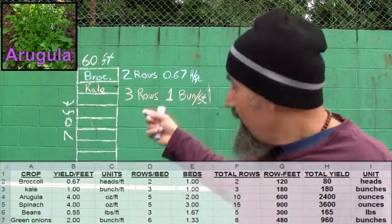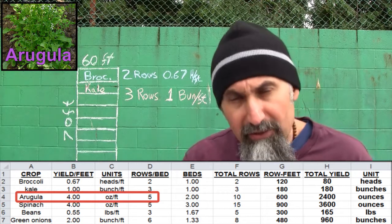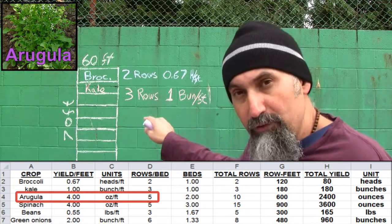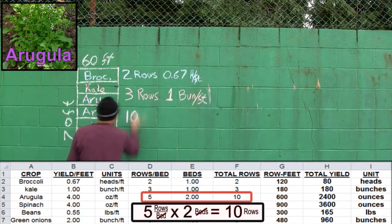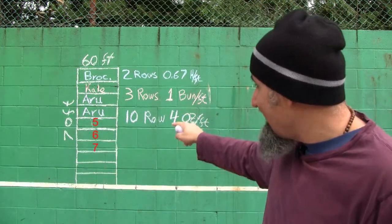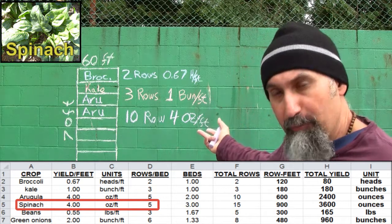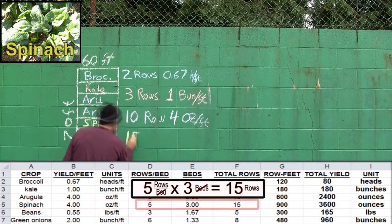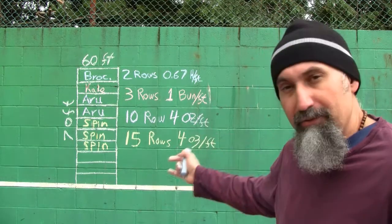In beds three and four we're going to plant arugula. For arugula, the units are ounces per foot — you get four ounces for every foot of row — and you can plant five rows per bed. Since we're planting two beds of arugula, we'll get a total of ten rows. In beds five, six, and seven we're going to plant spinach. The specs for spinach are also four ounces per foot and five rows per bed, so three beds of spinach gives us a total of 15 rows.